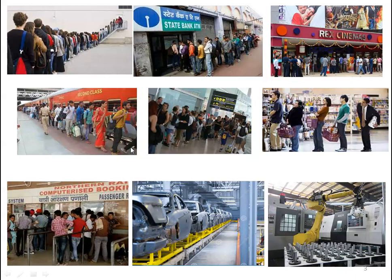We are in a queue for various reasons — for booking a ticket, to take money from an ATM machine, to book a cinema or train ticket, or to purchase something in a departmental store. In all these queues, we are standing for a certain service. We expect some service from the system — either people or jobs are waiting in the queue for a particular process or service.